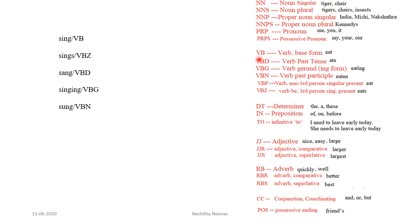VB is the tag for verb base form. VBD is verb past tense — for example, ate. VBG is verb gerund or ING form. VBN is verb past participial form — for example, eaten. For third person's present tense of verb, we can represent the tag as VBZ. For non-third person singular present form, we can use VBP.